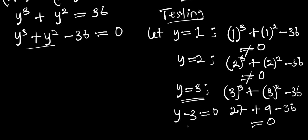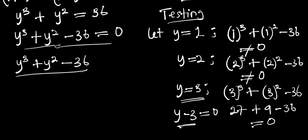Now that we have one factor, we need to find the other factors by dividing y to the power 3 plus y to the power 2 minus 36 by y minus 3. When we divide, we will find the other factor such that multiplying it with y minus 3 gives us our original polynomial. We can use long division or the synthetic method — in this video we will use synthetic division.